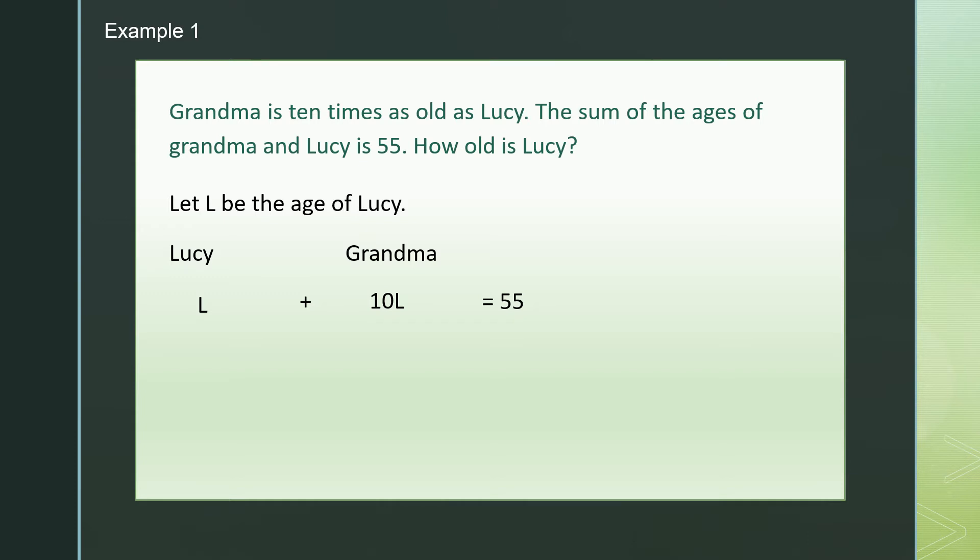L on one side and number on the other side. L plus 10L is 11L. So 11L equals to 55. We divide both sides by 11. 11L divided by 11 is L. 55 divided by 11 is 5. L equals to 5. Lucy is 5 years old.